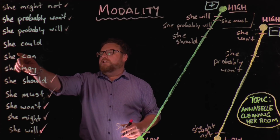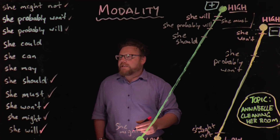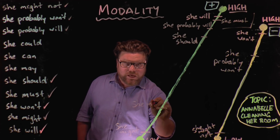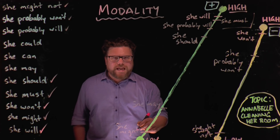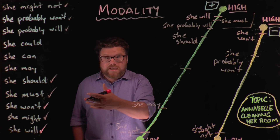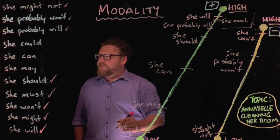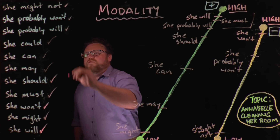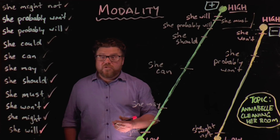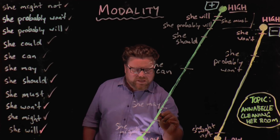Then we've got three left: 'she could,' 'she can,' and 'she may.' You could argue about these. 'She may' goes about in the middle — she may clean her room, or she may not. 'She can' goes a little higher, suggesting she's able to and it's possible, making it a higher modal than 'she might.' And 'she could' is probably lower than 'she may' and 'she can' — 'she could clean her room' carries the suggestion that it may not happen.